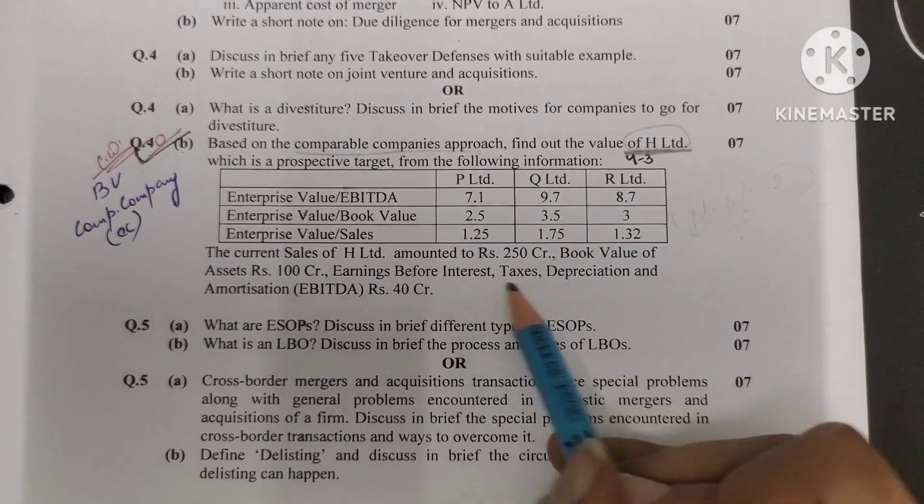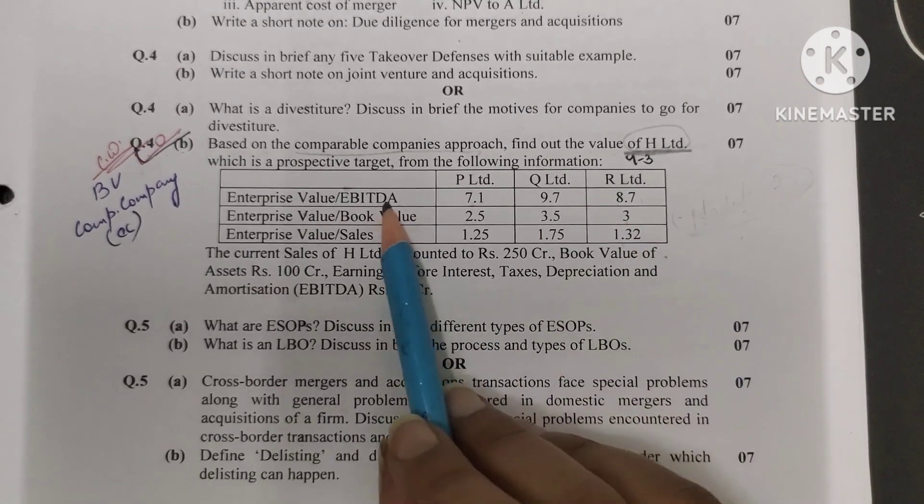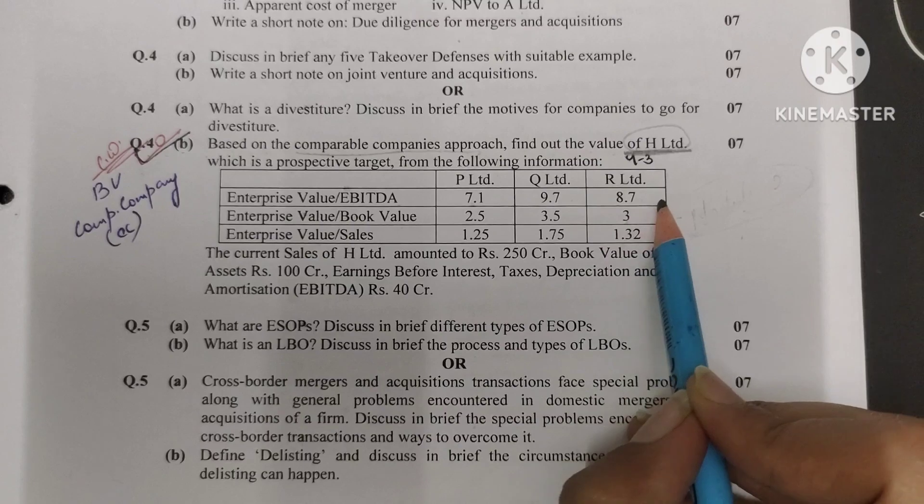When we discussed the method, we had an assumption that the value of the target firm's value should be similar. So if you can see, EBITDA is similar, almost there is not a lot of difference.